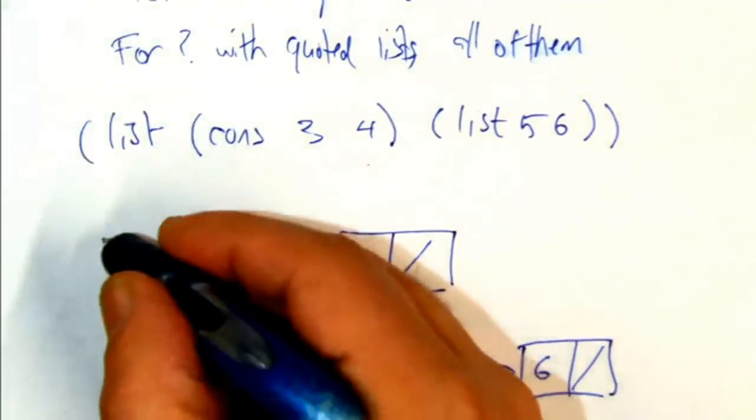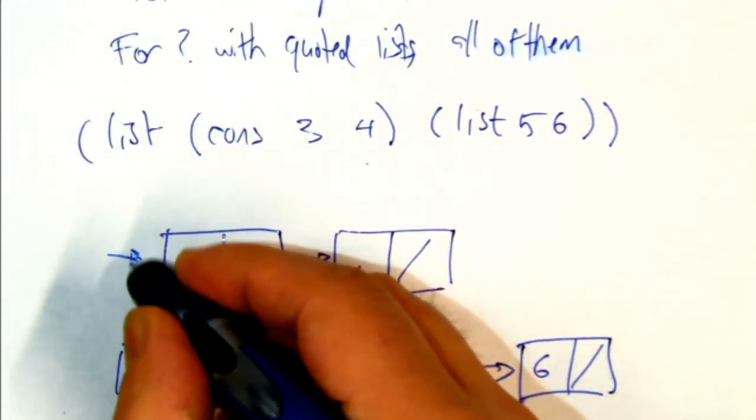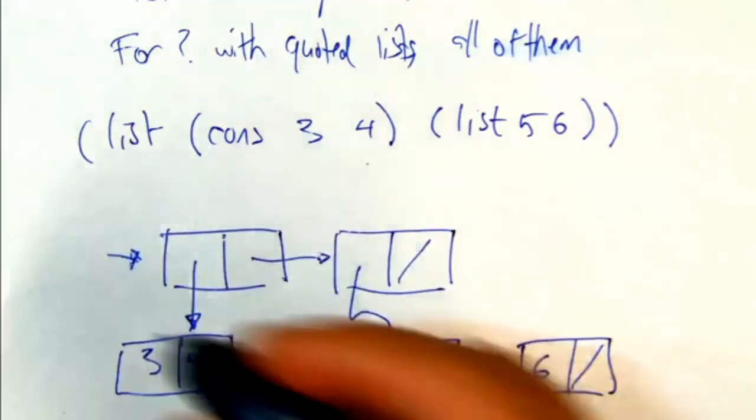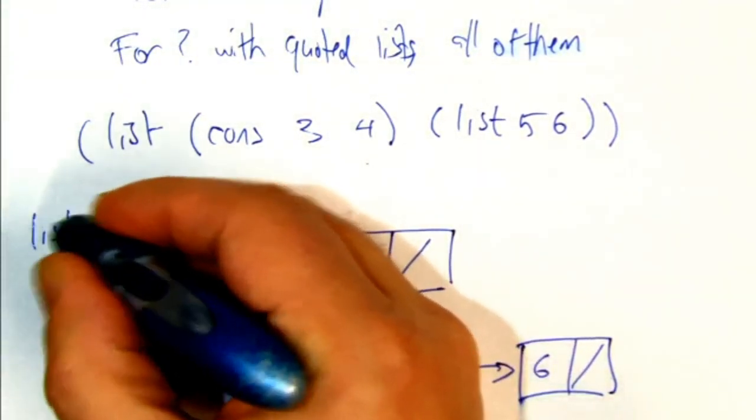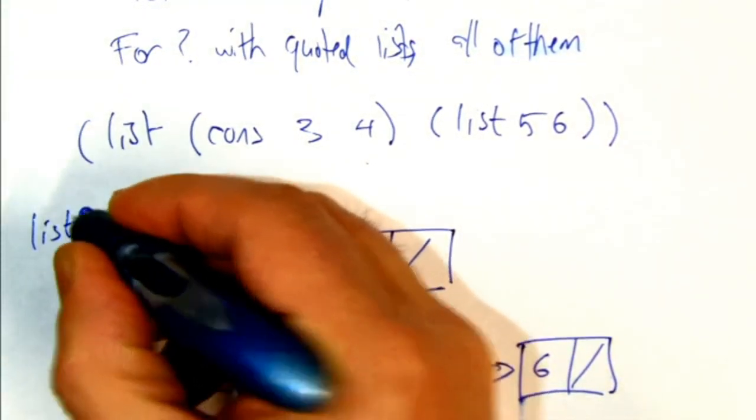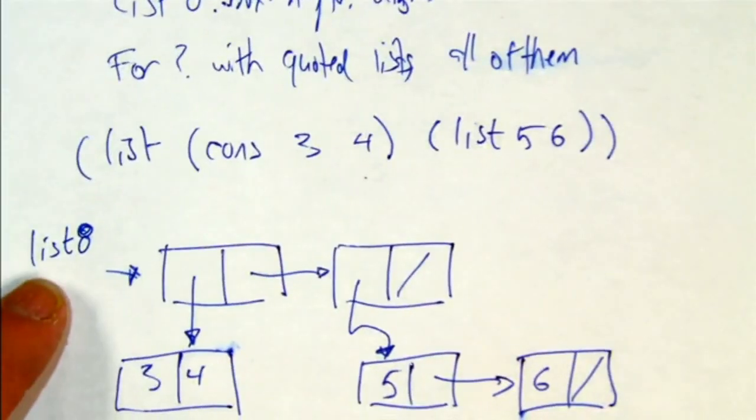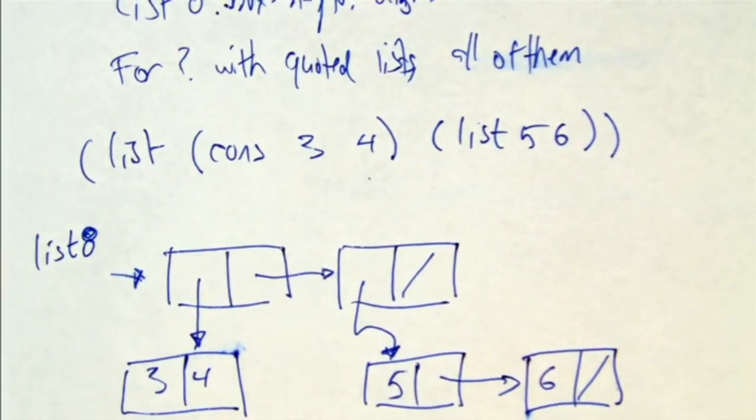And then this thing got bound to some symbol name. So we would draw that as what is called list eight, or something like that. So to make the full diagram, you're sort of showing that there's a binding from a symbol to that structure.